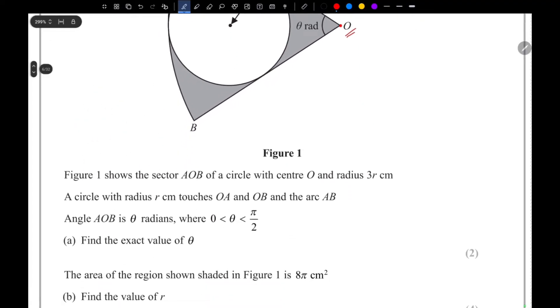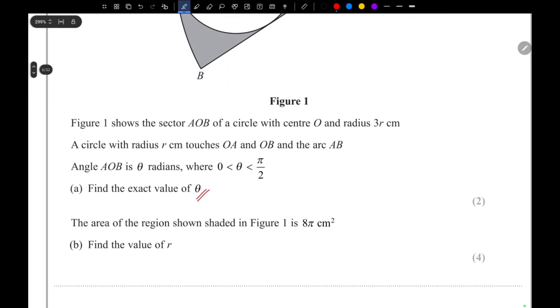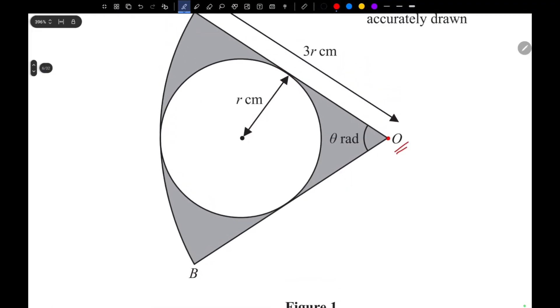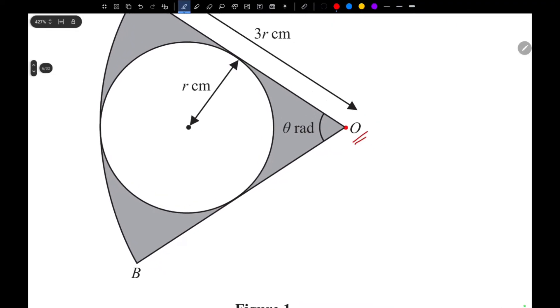First we need to find out the exact value of theta. Now we can see that there is another circle inside this sector. In order to find out the value of theta, we can use this point - let's call this point X - so we can draw a triangle from this point.